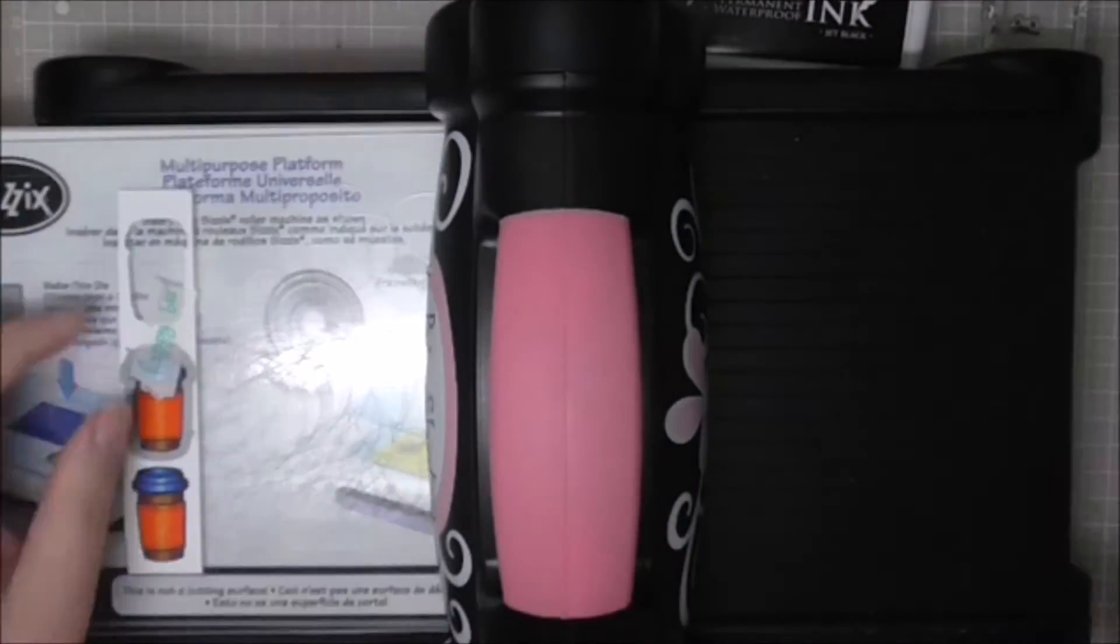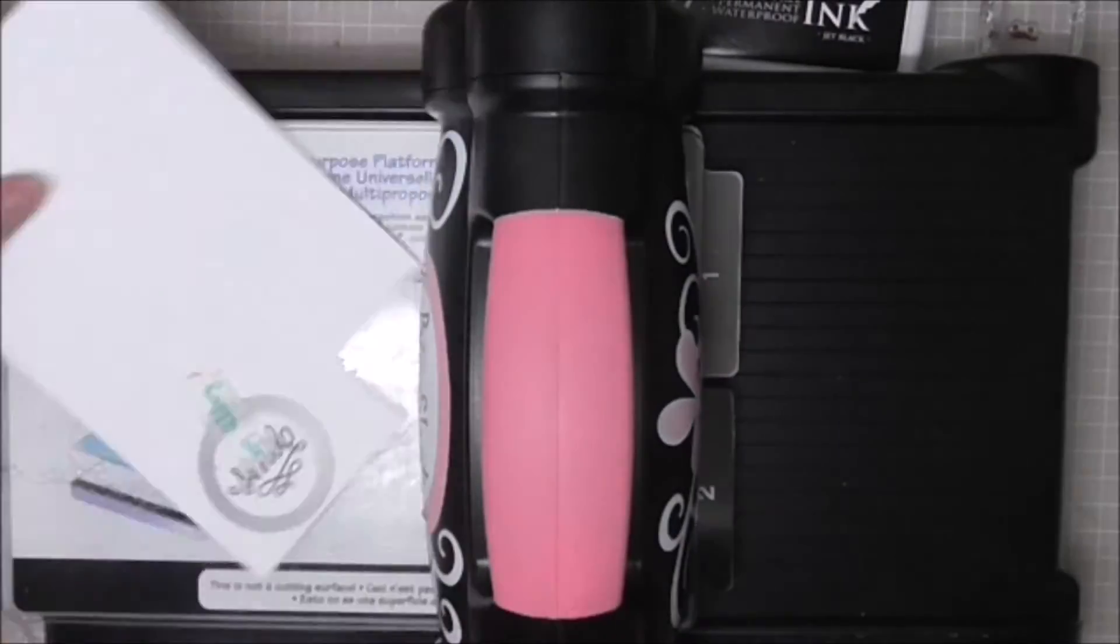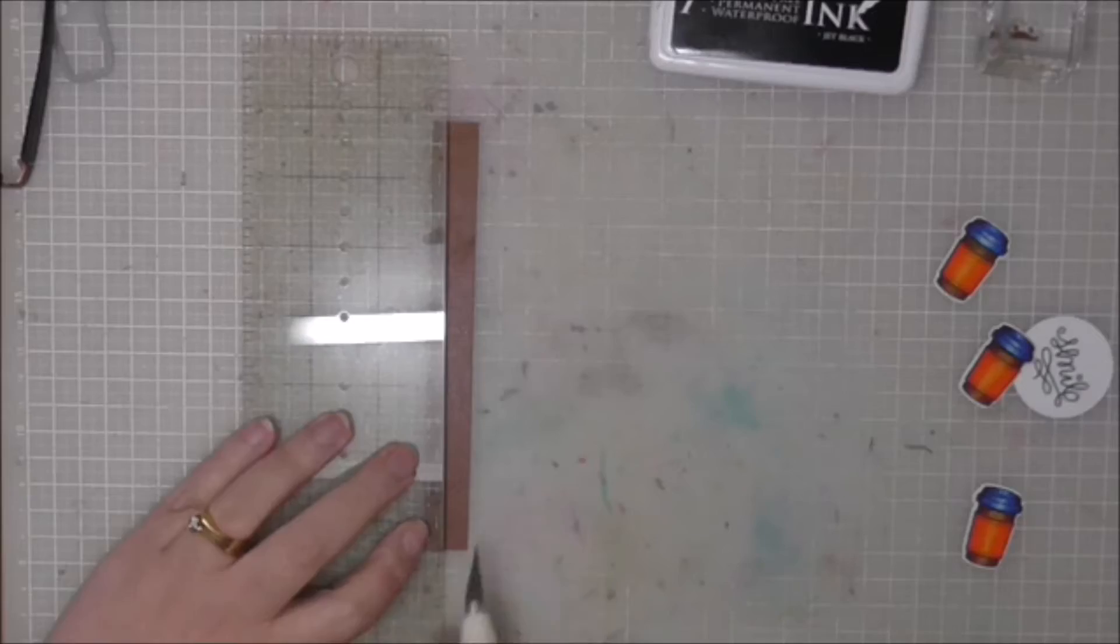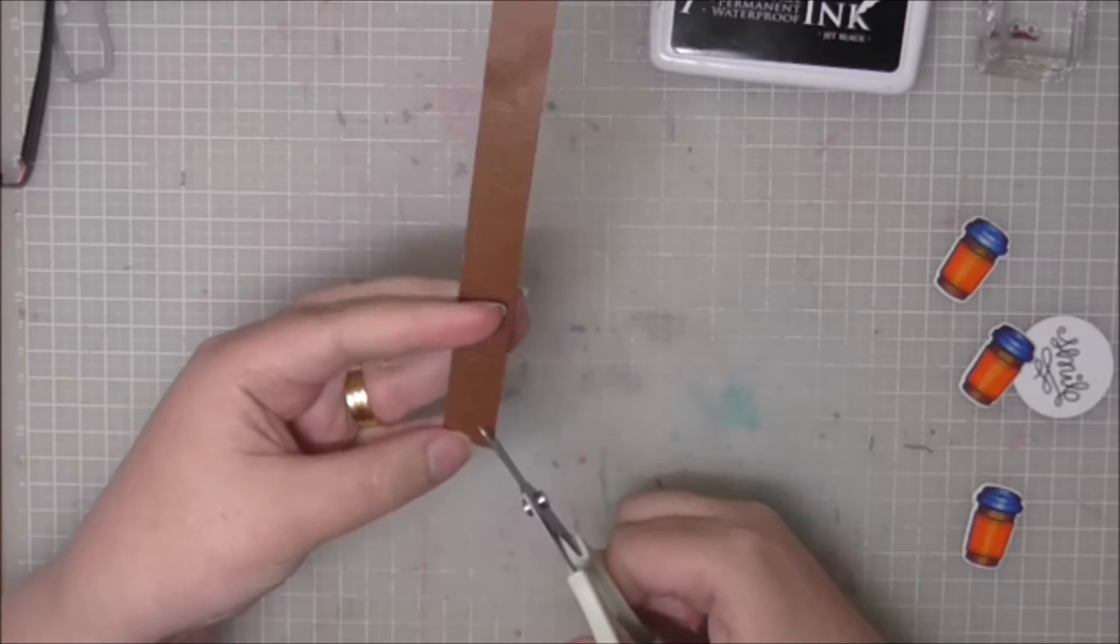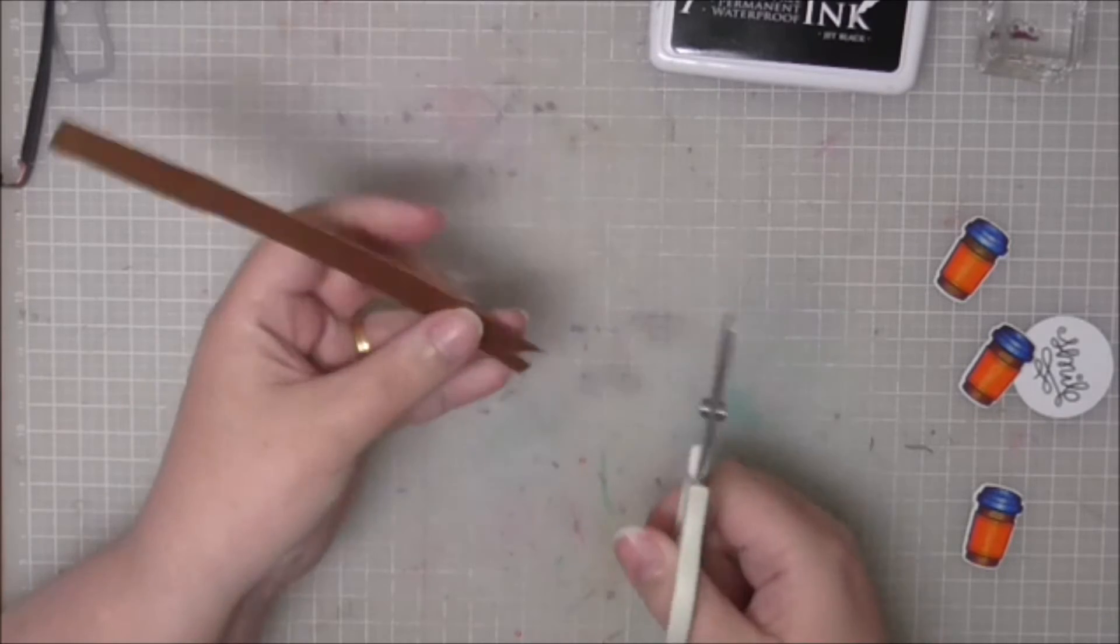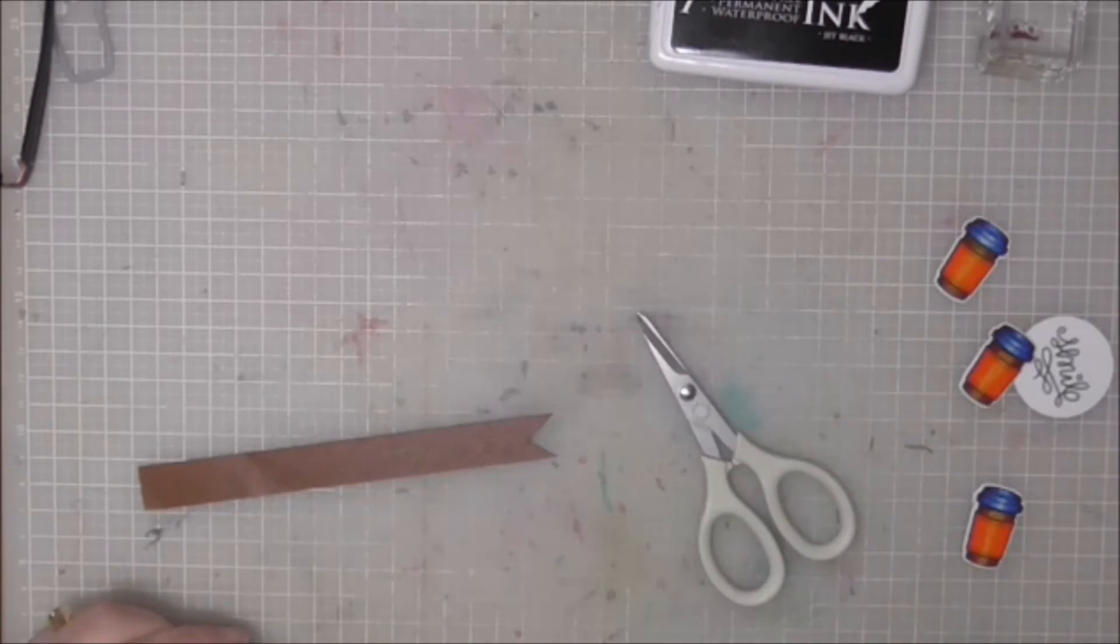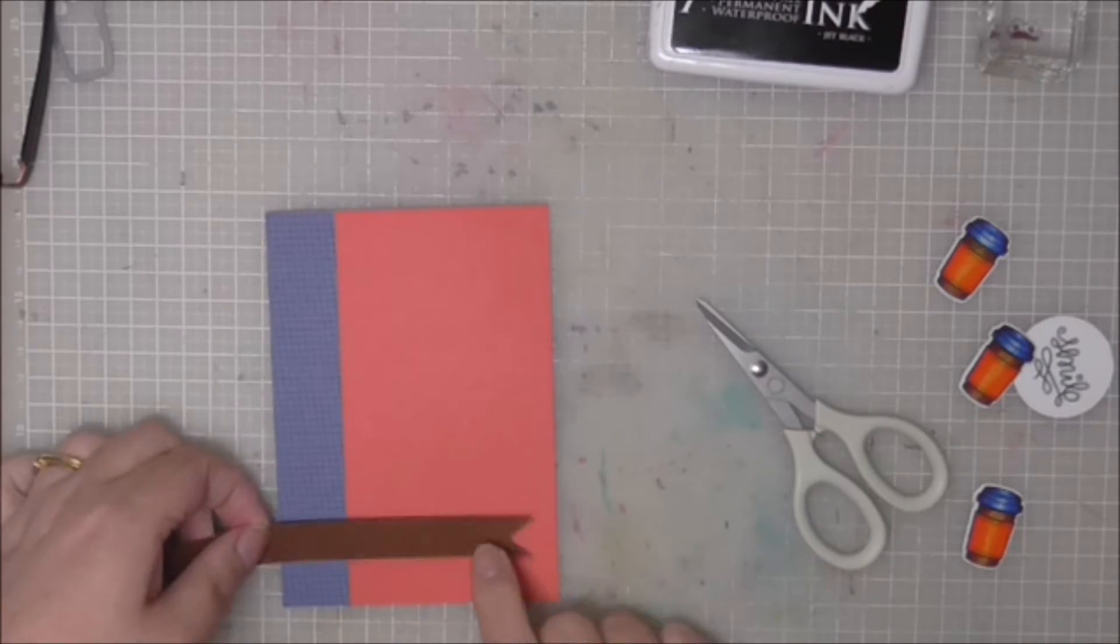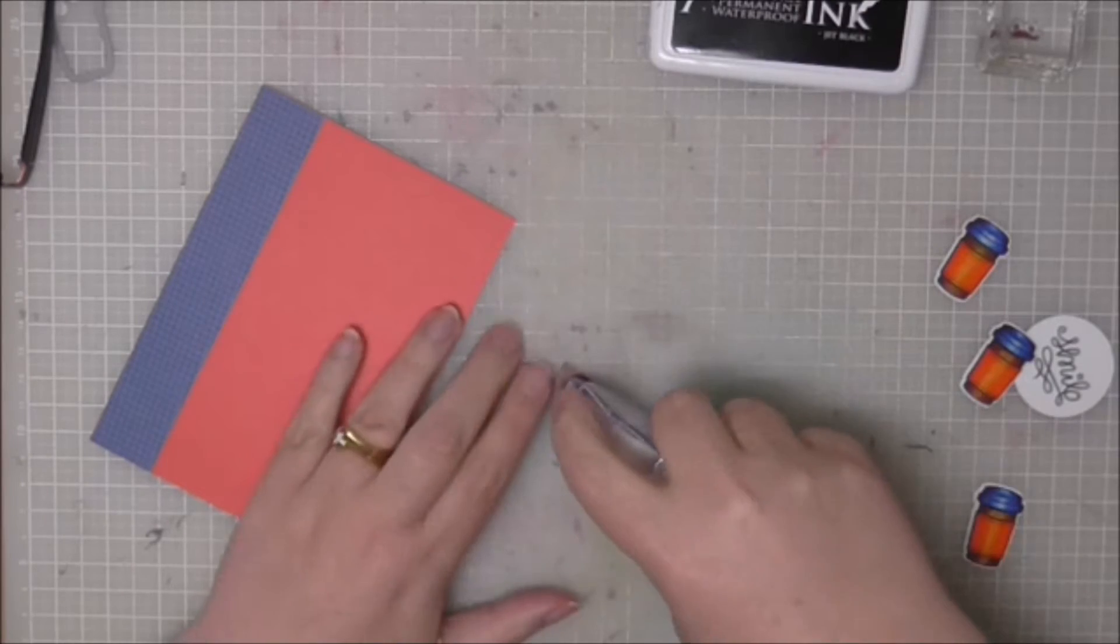I'm using the coordinating Love You A Latte die to cut out my coffee cups and I've also used a stitched circle to cut out our greeting as well. I used a scrap of brown cardstock left over from a previous project and just cut a small triangle out of the end to create a bit of a banner and I'm going to put that across the bottom there, kind of as a shelf for our coffee cups to sit on.